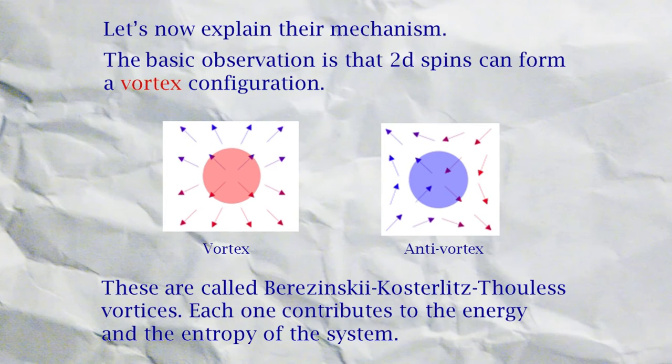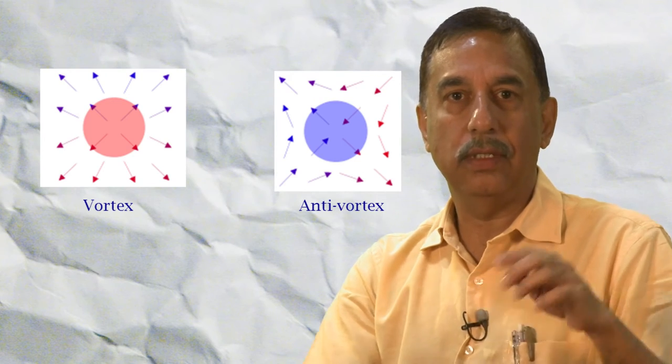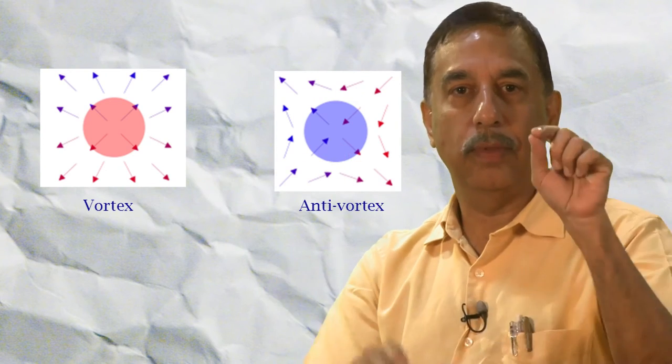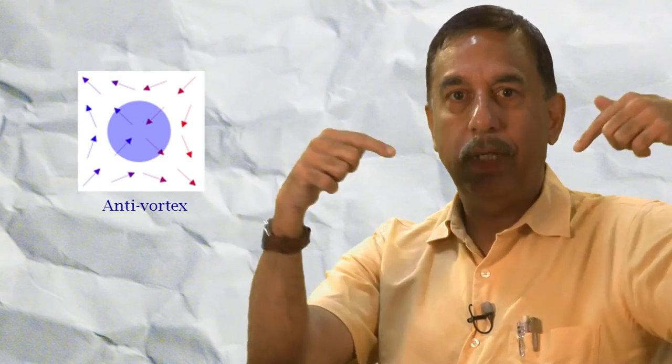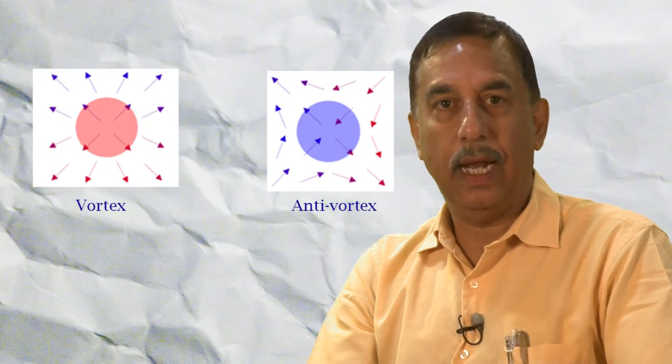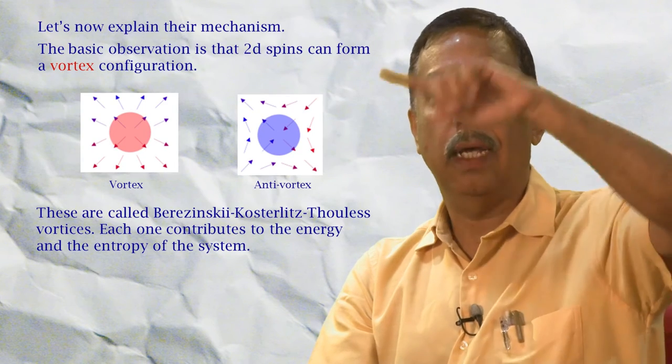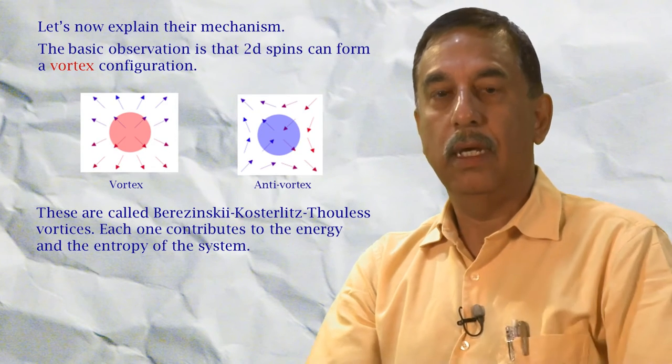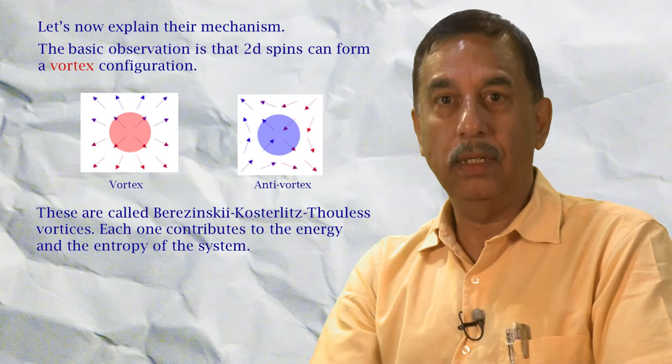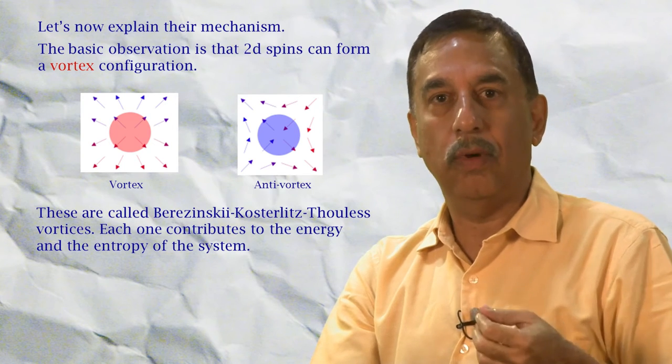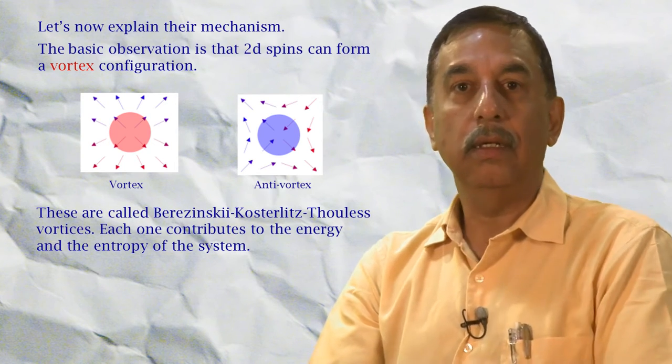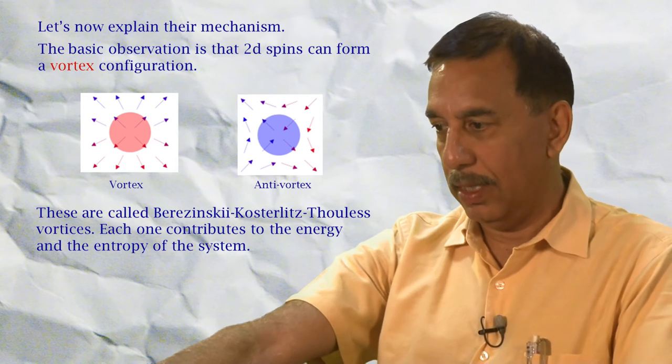Their basic observation was that spins in two dimensions can form a vortex configuration. I have drawn here two vortex configurations: one in which all the spins point out from a particular point, and the other in which sometimes they point in and in other places they point out. You can distinguish these vortex and anti-vortex configurations by noting that as I go counter-clockwise around the origin, in one case the spins also turn counter-clockwise, but in the other case they turn clockwise.